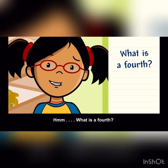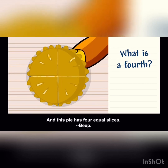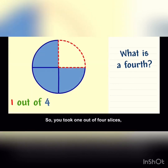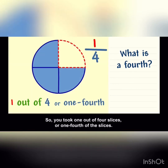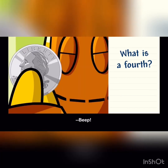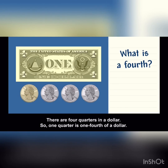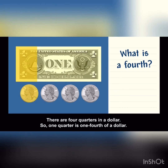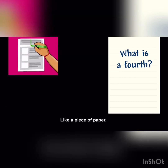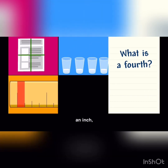What is a fourth? I love apple pie, and this pie has four equal slices. You took one slice, so you took one out of four slices, or one fourth of the slices. One fourth is also called one quarter. There are four quarters in a dollar, so one quarter is one fourth of a dollar. I can divide a lot of things into fourths — like a piece of paper, a cup of water, an inch, or an hour.